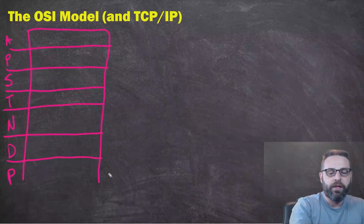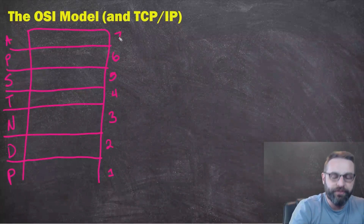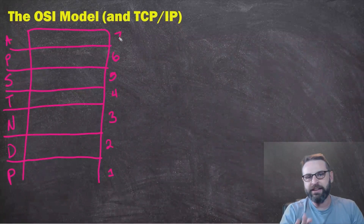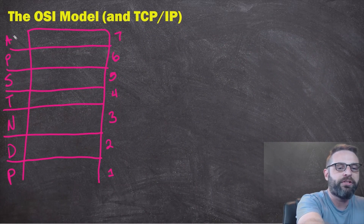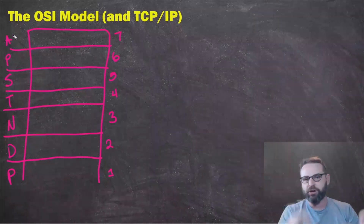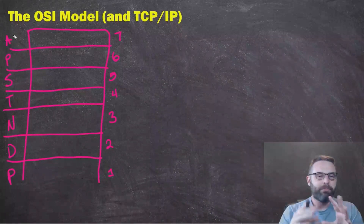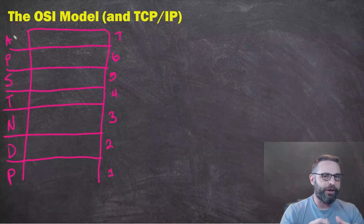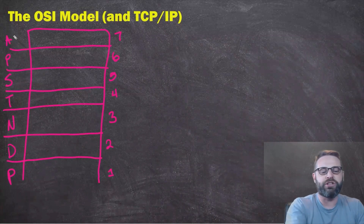Layer one at the bottom, up through layer two, three, four, five, six, and seven. Please Do Not Throw Sausage Pizza Away — starting at the bottom with one up to seven. The interesting thing is this is not where the data itself would originate. The data itself doesn't originate on layer one.